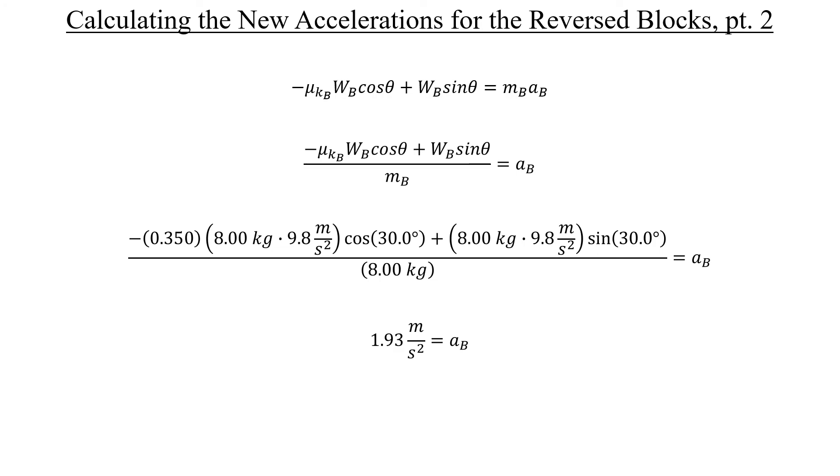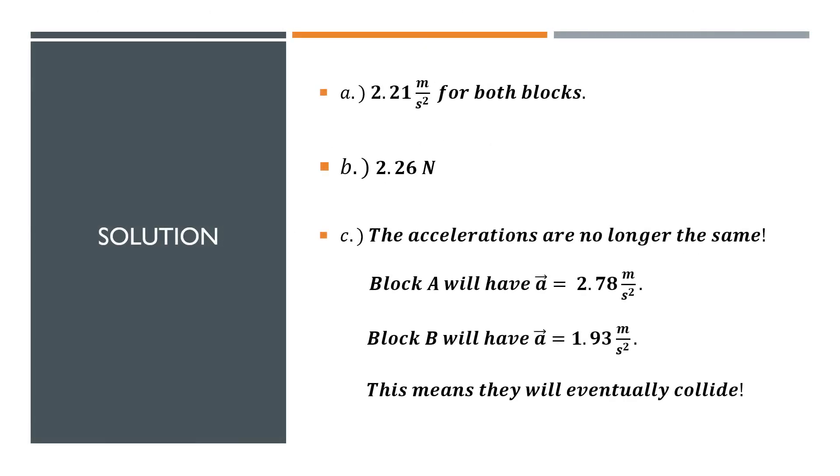But now, I've been talking for a while. Let's go ahead and wrap this all up in the solution card so it's kind of easy to see this all in one slide. Here are the answers that we obtained for each part of the problem. In part A, we saw that the blocks were connected by a taut string, so they shared the same acceleration, 2.21 meters per second squared. In part B, we calculated the tension acting on both blocks to verify that claim. And we found out, it's the same for both blocks as well. It's 2.26 newtons acting on both.